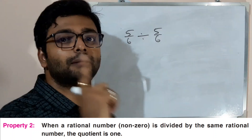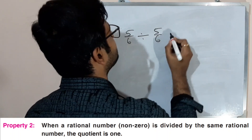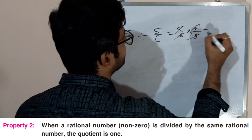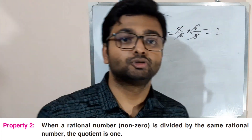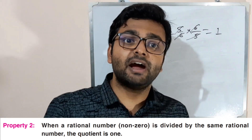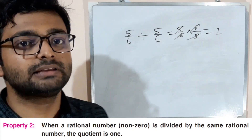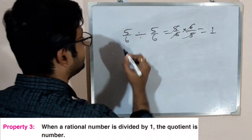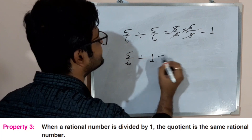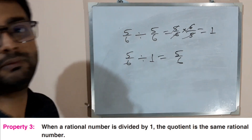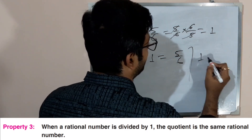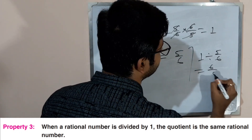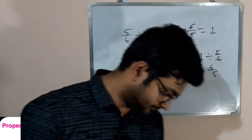So five by six divided by itself gives one — that is property number two. Property number three: when a rational number is divided by one, you get the same number. And if you divide one by five by six, you get the reciprocal, which is six by five.